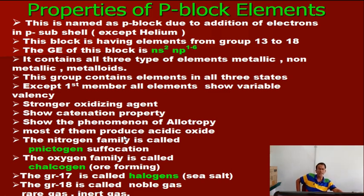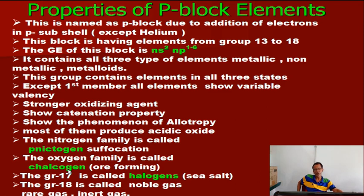P-block elements produce allotropes; for example, carbon has two allotropes: diamond and graphite. Most produce acidic oxides as they are non-metals. The Nitrogen family is called Pnictogens (due to suffocation). The Oxygen family is called Chalcogens (because they form ore — oxides and sulfides). Group 17 is called Halogens (forming sea salts): fluorine, chlorine, bromine, iodine, astatine. Group 16 (Chalcogens): oxygen, sulphur, selenium, tellurium, polonium. Group 15 (Pnictogens): nitrogen, phosphorus, arsenic, antimony, bismuth.